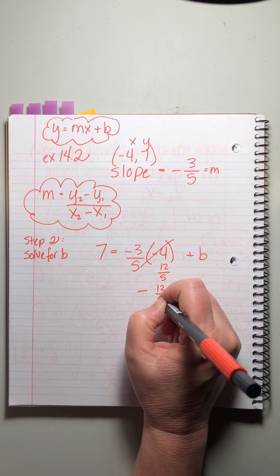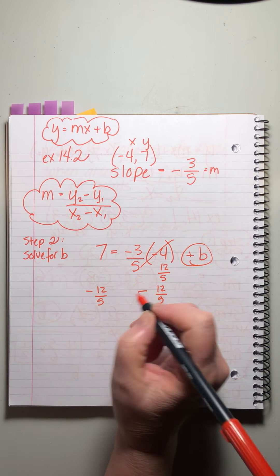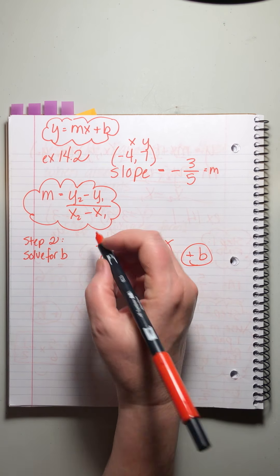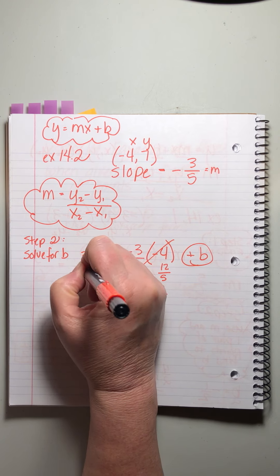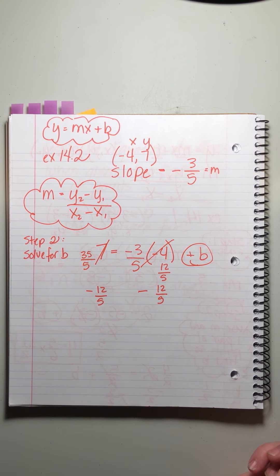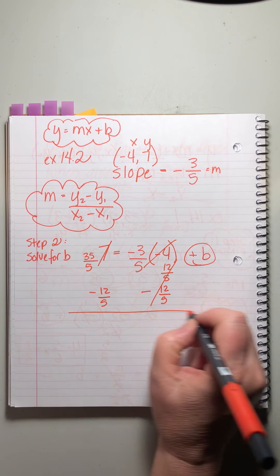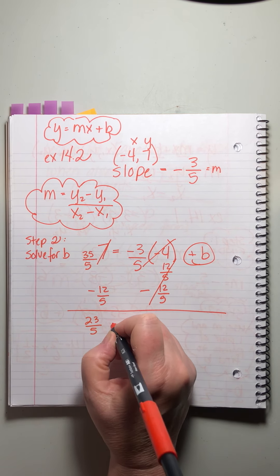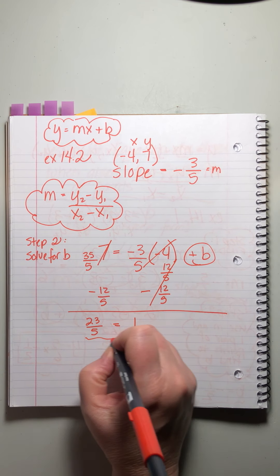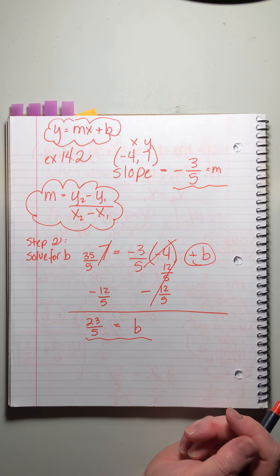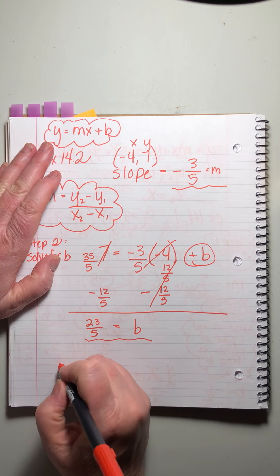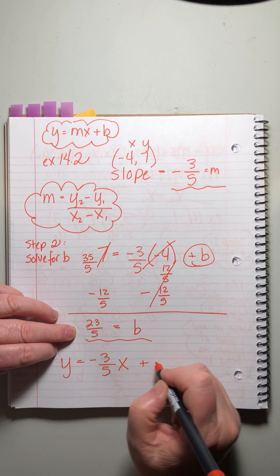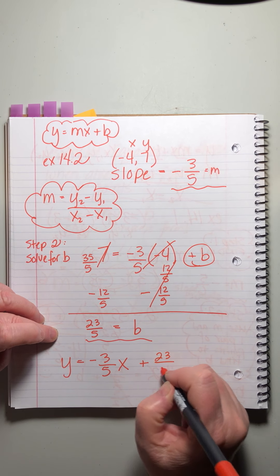Now we subtract 12 over five to isolate our B. I have to fix this to turn it into a fraction. I want it over five. So I'll multiply it by five times five, five over five, rather. So it becomes 35 over five. Does that make sense? And now this cancels. 35 minus 12 is what? 23 over five equals B. That's a disgusting number. But again, all we have to do is write it down. It's not that big of a deal. So for our final answer, we write Y equals minus three over five X plus, because it's positive, 23 over five.